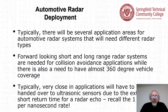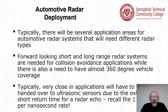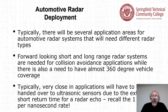Typically there are several application areas for automotive radar requiring different radar types. Forward-looking short and long range radar systems are needed for collision avoidance, while almost 360-degree vehicle coverage is also needed. Very close-in applications must be handed over to ultrasonic sensors due to the extremely short echo return time — at the one-foot-per-nanosecond rate.